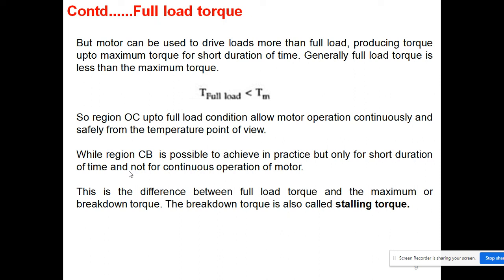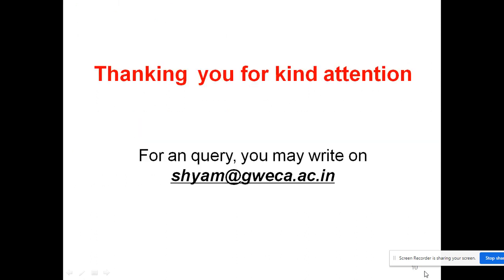In summary: the region O to C allows continuous and safe motor operation from a temperature point of view, while the region C to A (full load to maximum/breakdown torque) is achievable in practice only for short durations, not for continuous operation. The maximum torque is also known as the breakdown torque or pulling torque. I hope you now understand the concept of torque-slip characteristics and its significance for the three-phase induction motor. For any questions, you can write to me at the provided email address. Thank you.